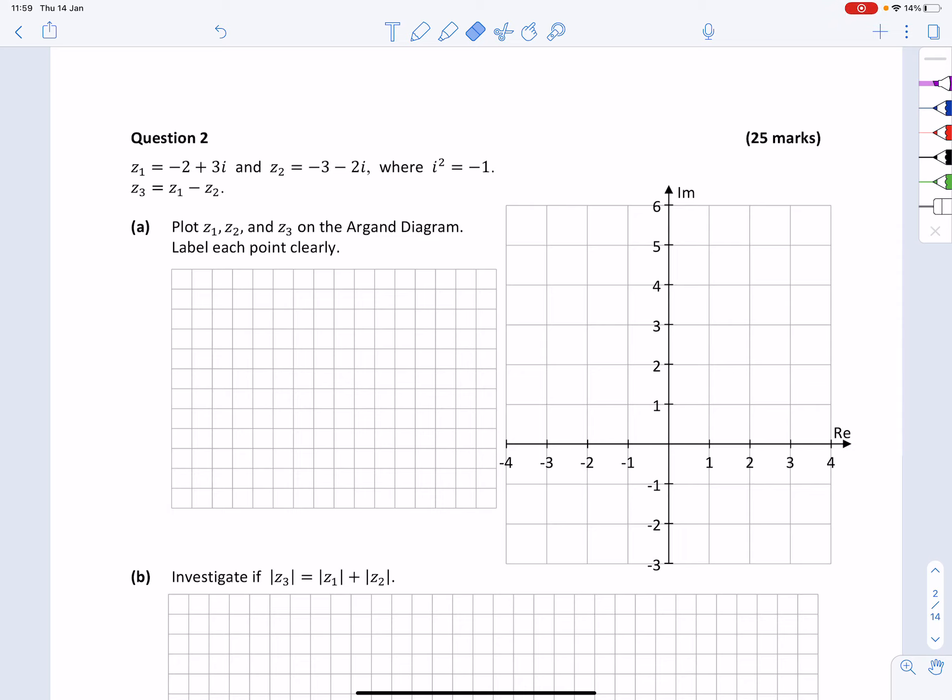Hi, in this video we're going to take a look at 2018 ordinary level maths, paper 1, and this is question 2. So this is a complex number question. We are told that we have two complex numbers, Z1 and Z2, and Z3, which is a result of some calculations between the previous two numbers.